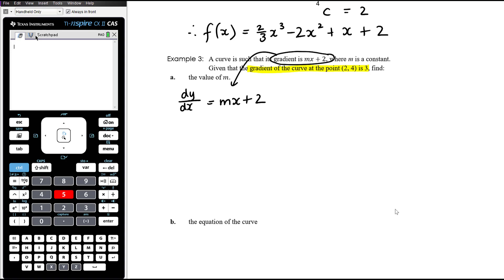So the two bits of information that we've got there are when x equals 2, y equals 4, but also when x equals 2, dy/dx, the gradient is 3. So we're going to use that second bit of information here in order to find the value of m. So the gradient is 3 when x is 2. And so that is 3 equals 2m plus 2. So 1 equals 2m and therefore m equals 1 half.